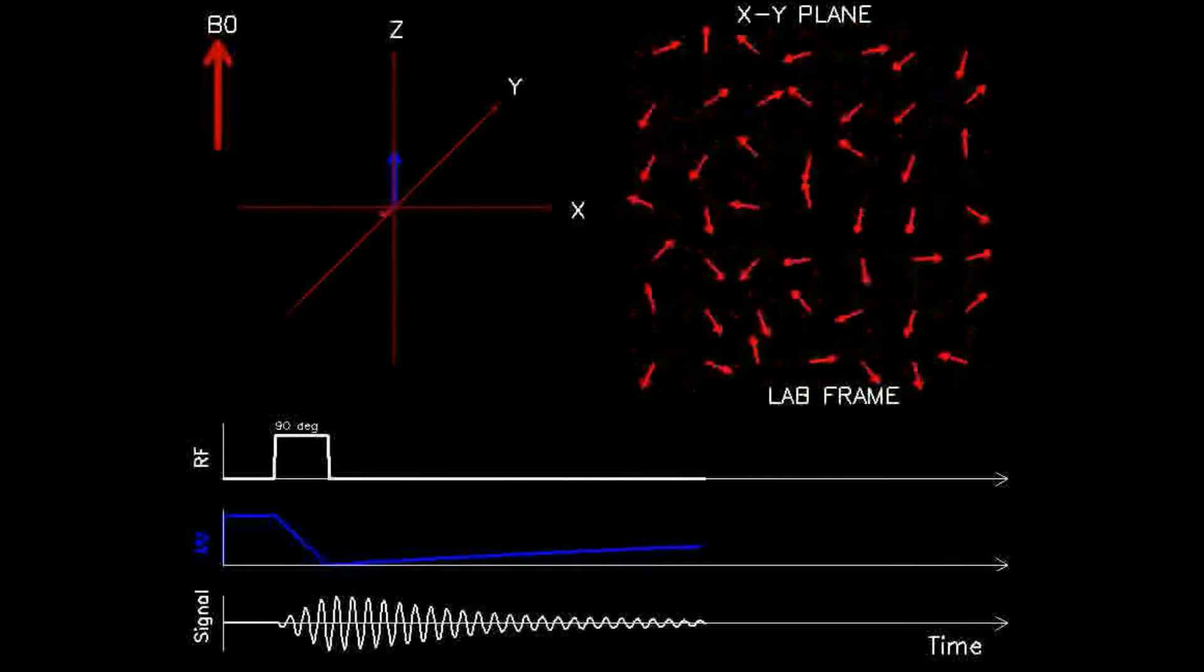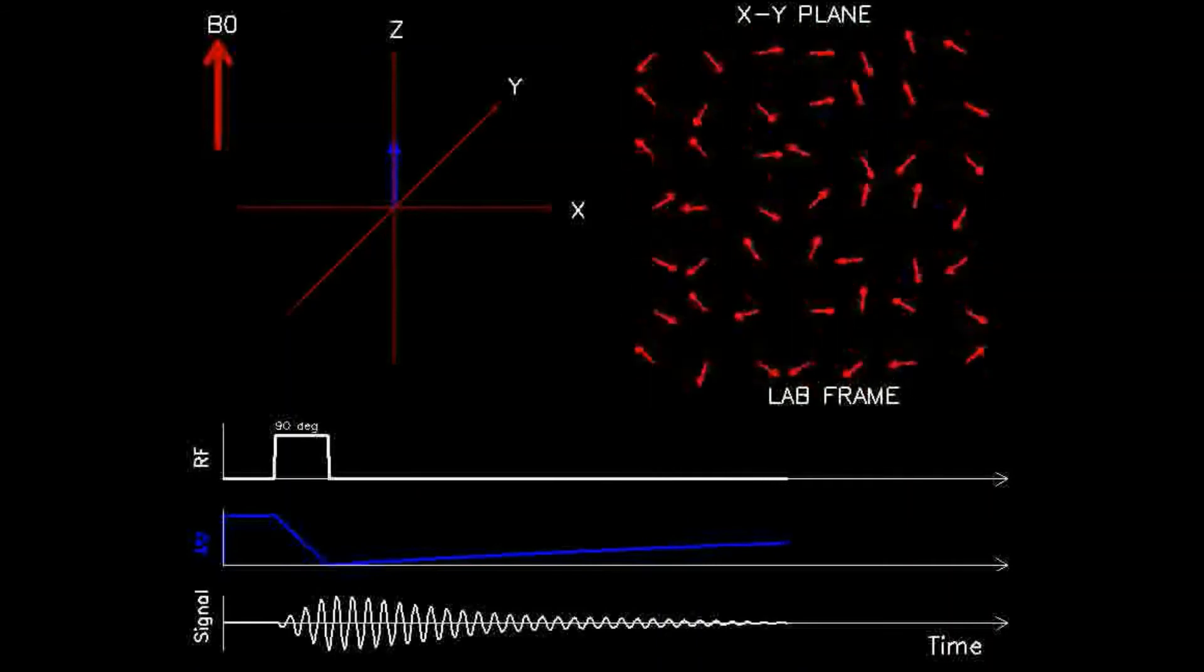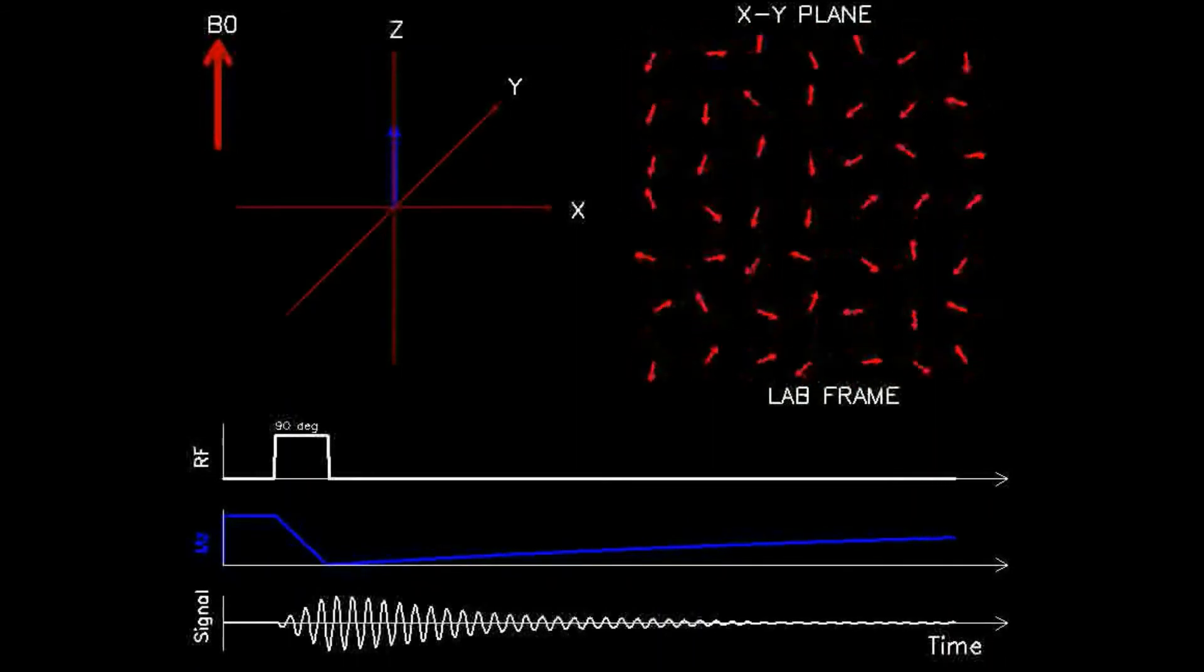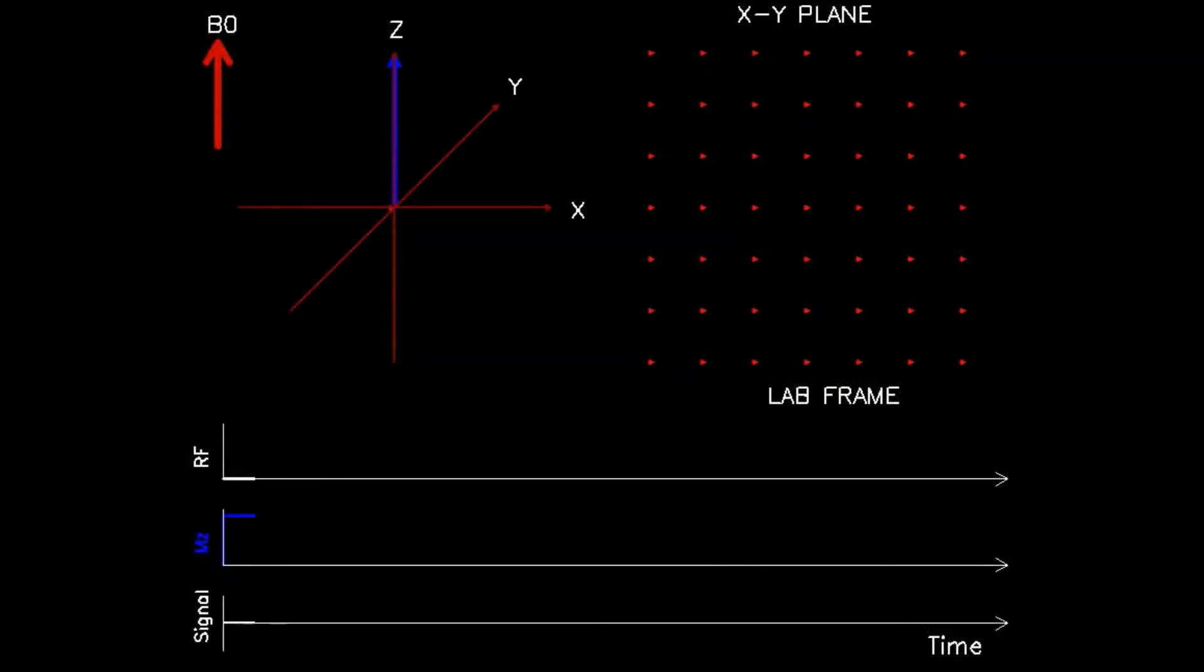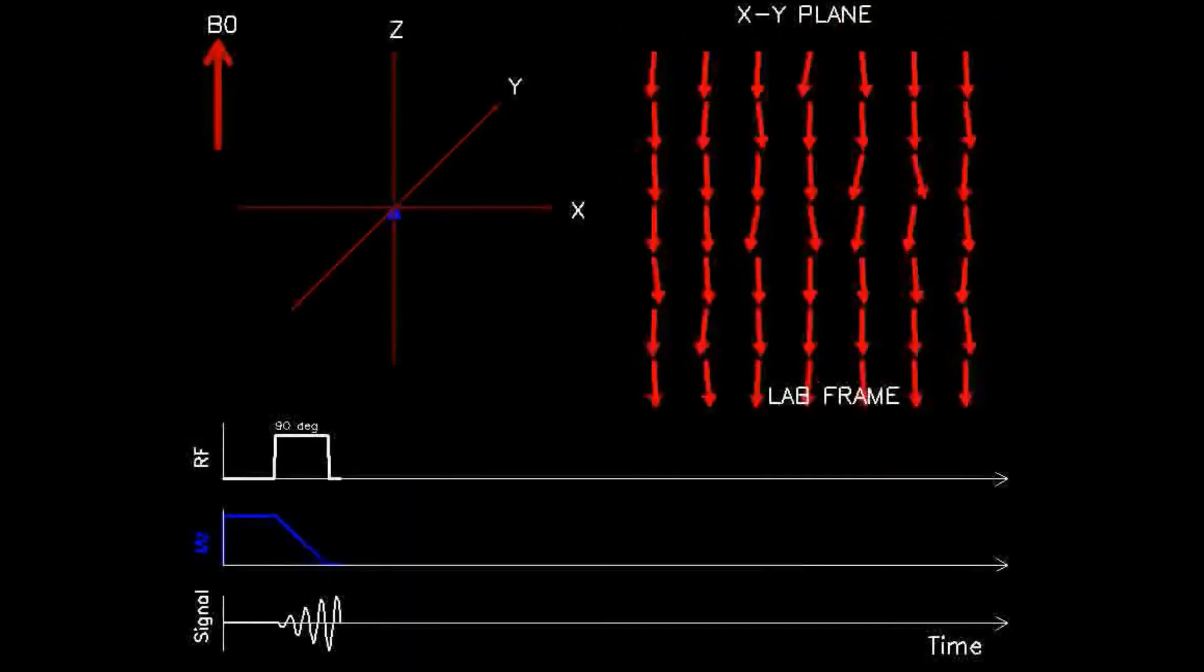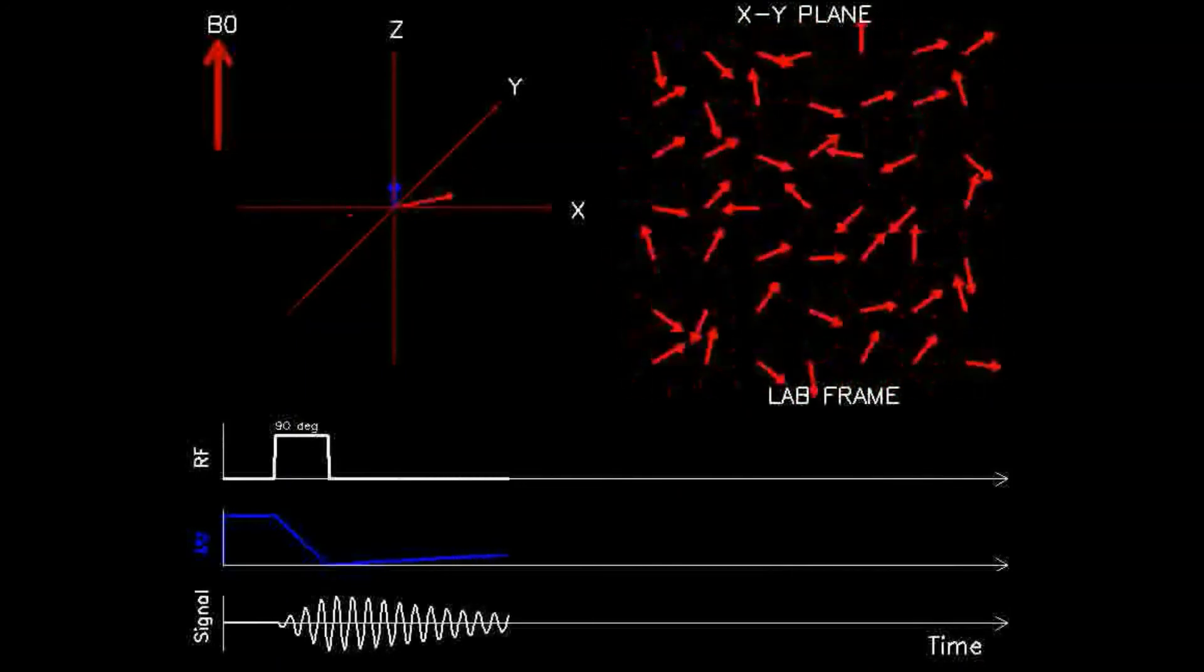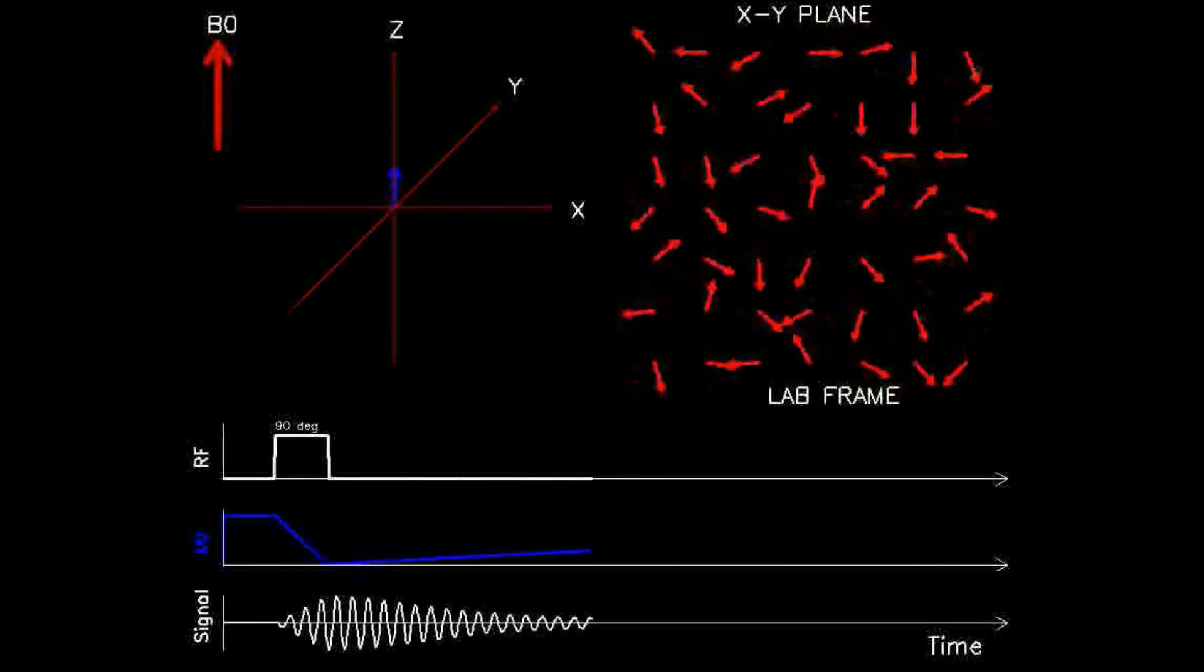From now on, when an arrow is depicted, it will represent the magnetic moment of a single voxel, not a single dipole. And why is this really necessary? In this example, we will model 49 dipoles in a voxel, and in reality there are about a thousand billion billion dipoles in a voxel. That's why.